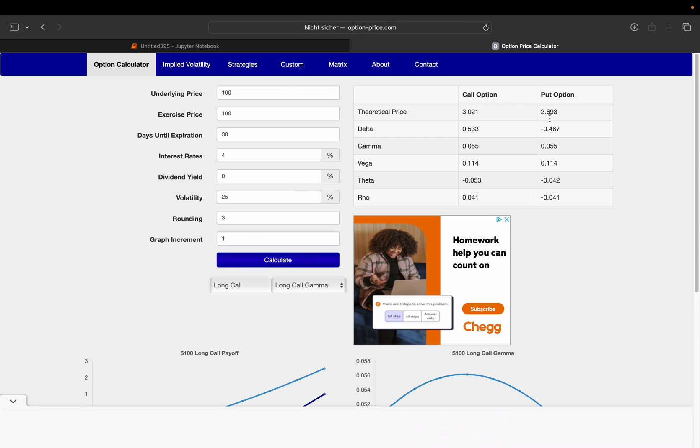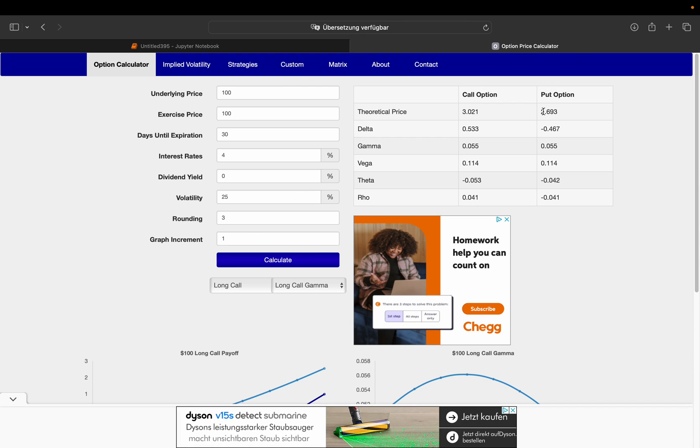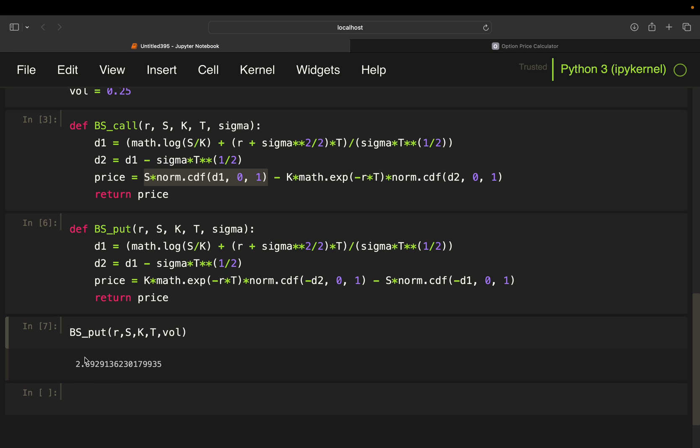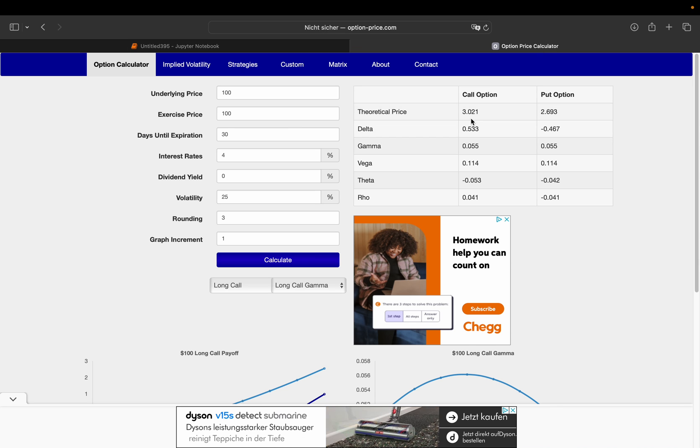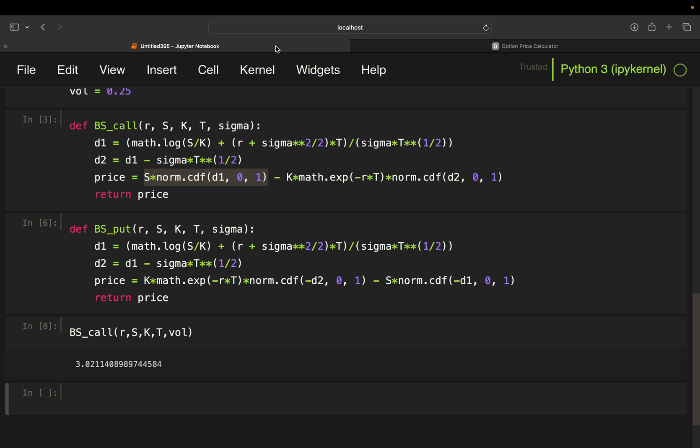We got a put option value of 2.693, and we have 2.693 here. So, everything is fine, just for the call again, 3.0211, 3.0211.